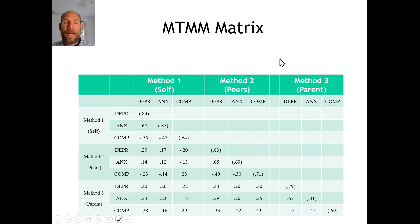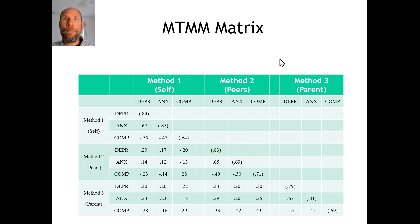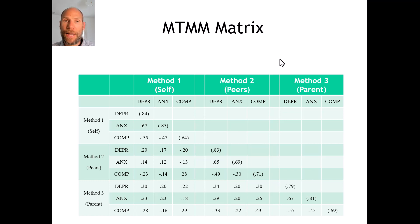Here you can see an example of an actual MTMM matrix from actual psychological research. In this study, three different attributes were measured: depression, anxiety, and competences of children. The methods used were self-reports, where the children rated themselves with regard to their own depression, anxiety level, and different types of competences that were aggregated to an overall competence score.